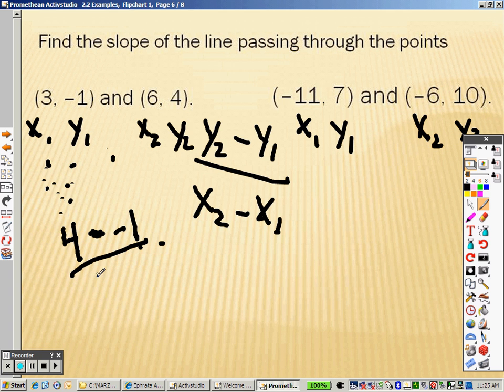over x2, which is 6, minus x1, which is 3, so plus positive there, and we're getting 5 over 3.